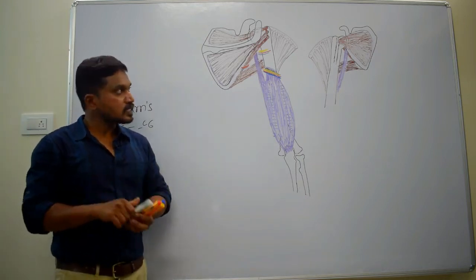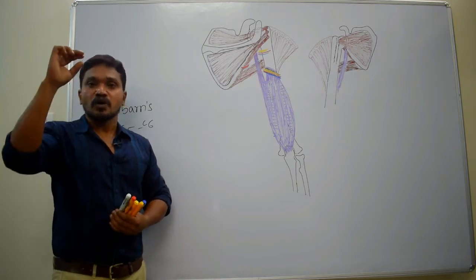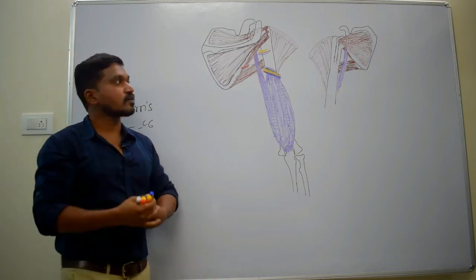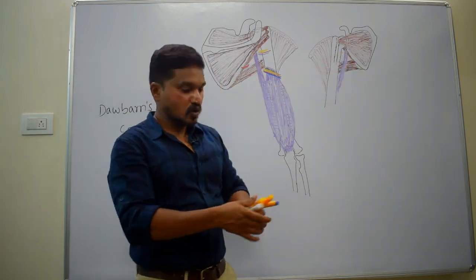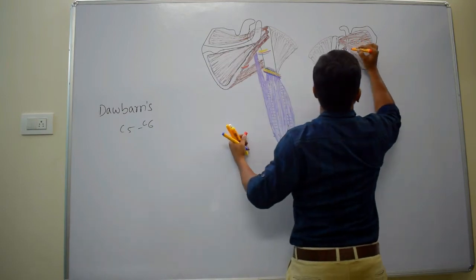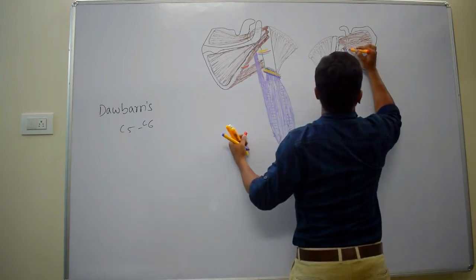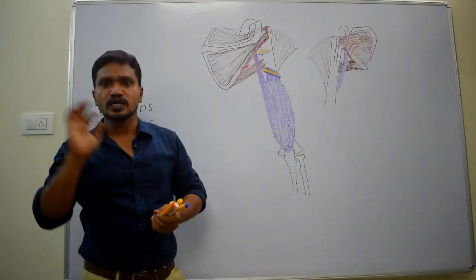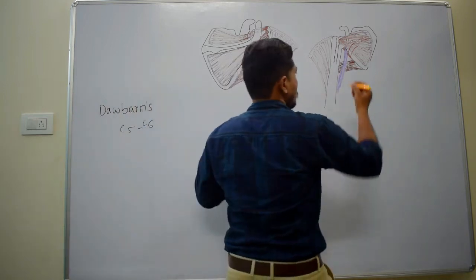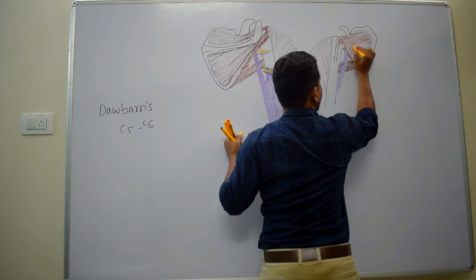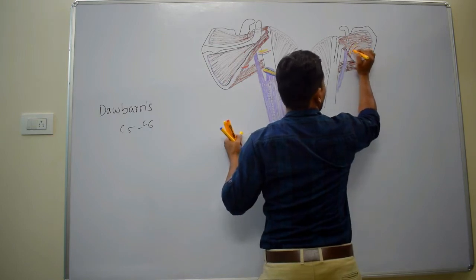The axillary nerve is present in the lower part of the axilla, behind the axillary artery and in front of the subscapularis muscle. Here I am drawing the axillary artery — behind the axillary artery there will be the posterior cord of the brachial plexus, shown with dotted lines because it is present behind the axillary artery.